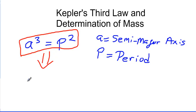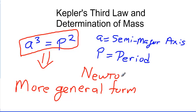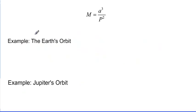Newton gave us a more general form that can actually be used to determine masses. Looking at the simplified equation, there is no way to determine the mass — all we have is the semi-major axis and the orbital period. In order to determine the mass, we need an equation that involves mass. That equation says mass equals a cubed over p squared. So if we know A and P, which are easy to determine, we can find the mass.